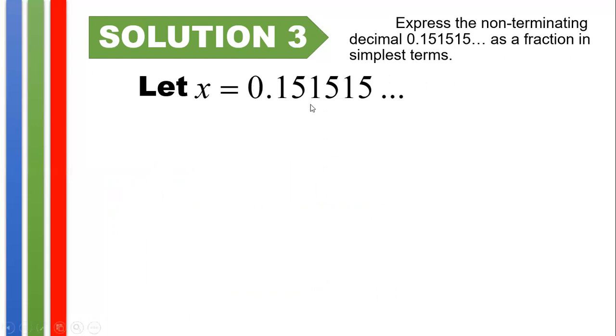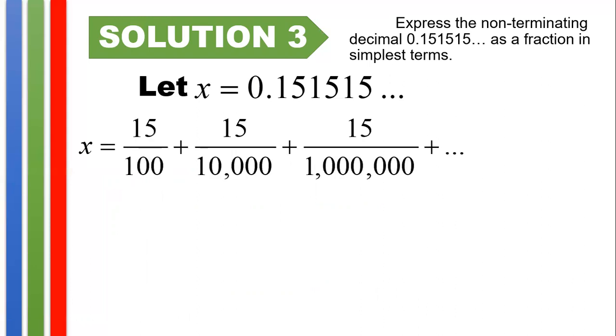Let x still be equal to 0.151515... And we could see here that we could actually rewrite x, this decimal here, into 15/100. That's the first one, 0.15, that's one, two, so it's 15 hundredths, or 15/100. Plus, the second 15 here is equal to 15 ten-thousandths, or 15/10,000, plus the third 15 here, that's one, two, three, four, five, six. So, it's divided by 1, followed by six zeros, or 15/1,000,000, plus this continues forever. That's why x is equal to this expression here.